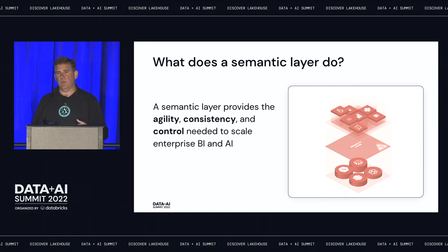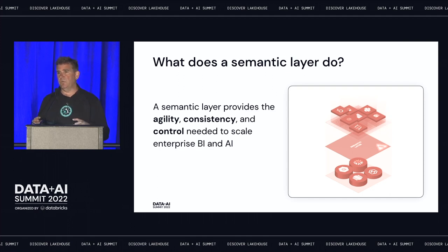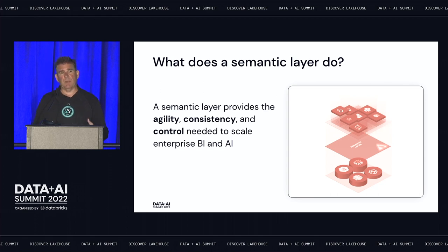The difference with today's semantic layers is that they're universal and they stand alone, separate and distinct from how you consume the data as well as how you store the data. The semantic layer really is a separate component in the stack. By making it a separate component, it gives you the opportunity to centralize your business logic, centralize your governance logic, and do that all in one place — regardless of whether your consumers are a data scientist using a Jupyter notebook, a business analyst using Excel or Power BI, or an application developer building applications.